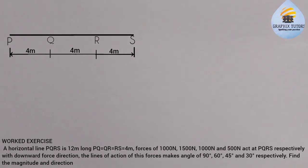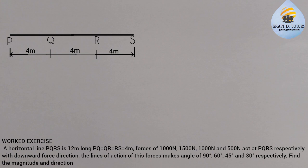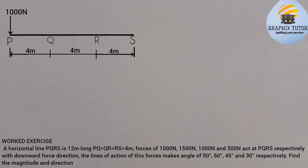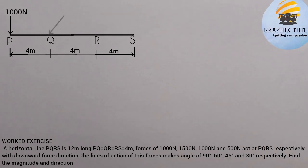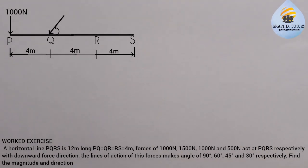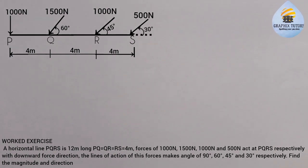The arrows are facing downward. The 1000 N at P acts at 90 degrees, so it is perpendicular to the horizontal line PQRX. The 1500 N at Q acts at 60 degrees to the horizontal. The 1000 N at R acts at 45 degrees to the horizontal. The 500 N at X acts at 30 degrees to the horizontal. These are the four forces; we need to find the resultant magnitude and direction.